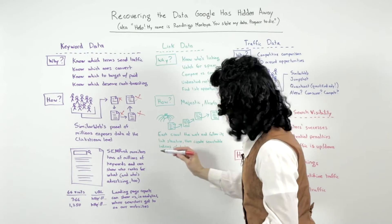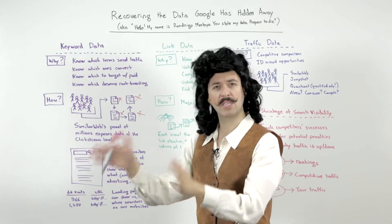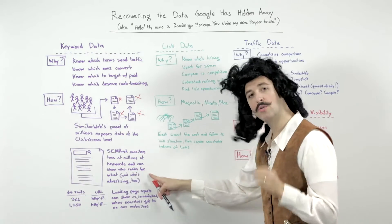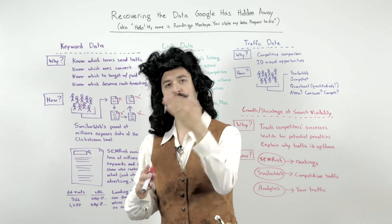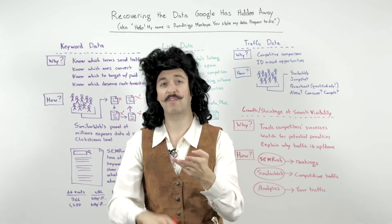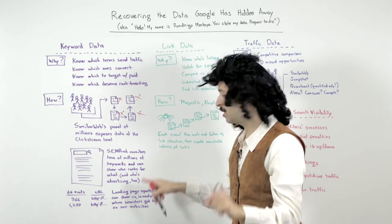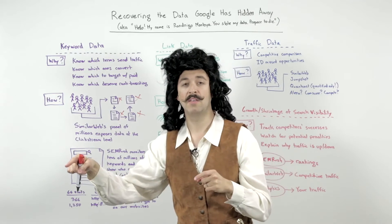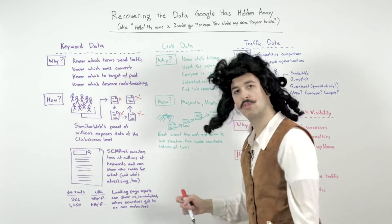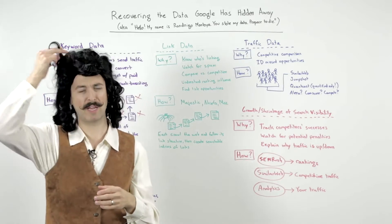SEMrush is another one. SEMrush monitors tens of millions of keywords — something in excess of 50 million keywords in the United States and many more millions outside the US as well. They can show who ranks for what today as well as historically, so you can see over time the trend there, and you can see who's advertising. So if you know a competitor is targeting the same market space as you, you can go to SEMrush, plug them in, see all the keywords they're getting organic and paid traffic from, and then start adding those to your keyword research list. You can match that up with visit data — since you know the page that ranked, you can see in your own visit data from landing page reports which ones got the traffic and which ones didn't. That's pretty cool and may even get us to a place of implied click-through rate, which is great.